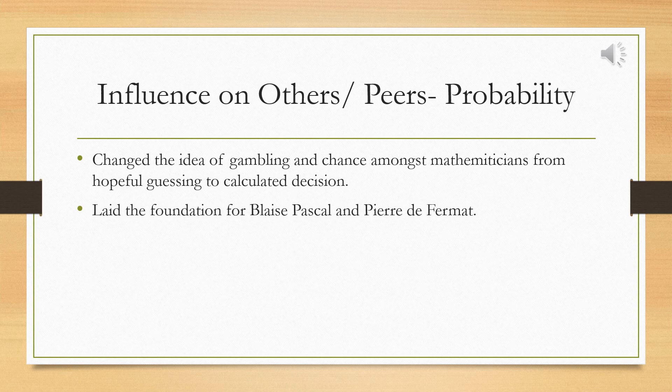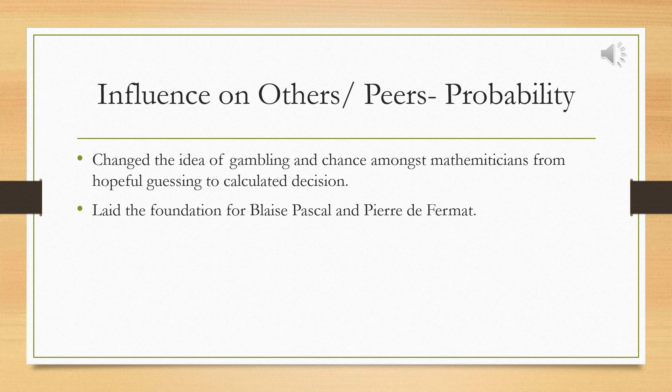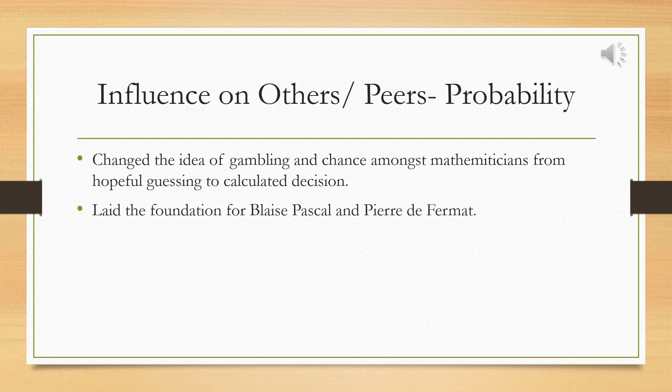Before Cardano systematically analyzed probability, no one had any understanding of the theory behind odds, chance, and risk. He began this area of study by considering the possibility that games of chance are governed by fundamental mathematics rather than by elusive luck. He changed the idea of gambling from hopeful guessing to calculated decision. Nearly a century after Cardano published his work on probability, Blaise Pascal and Pierre de Fermat built upon his findings to create the building blocks of probability.